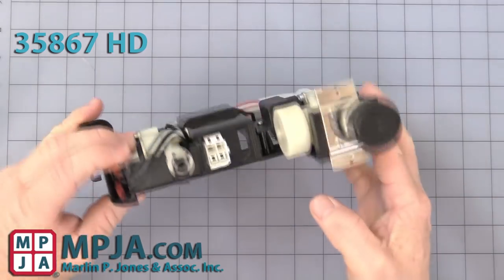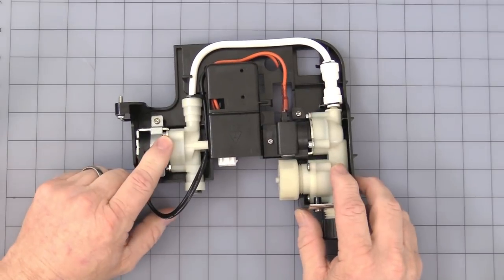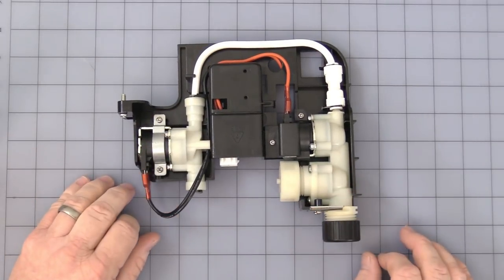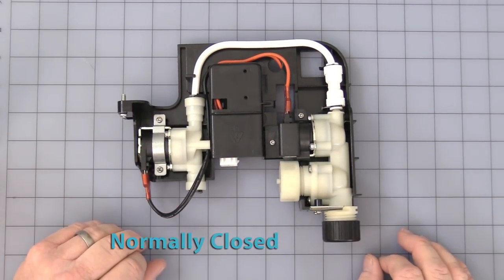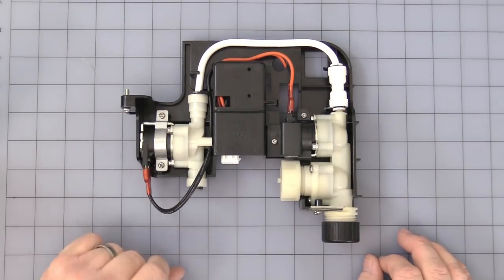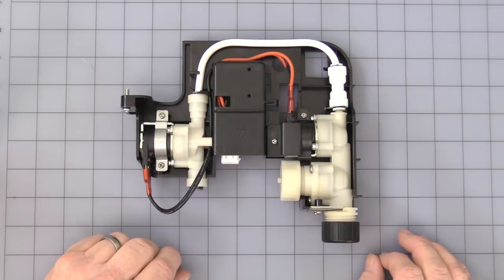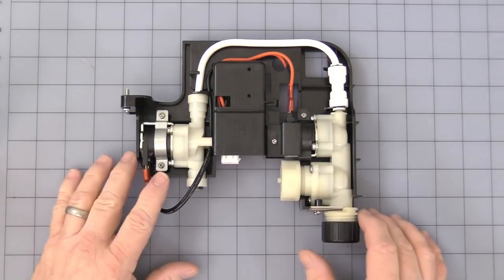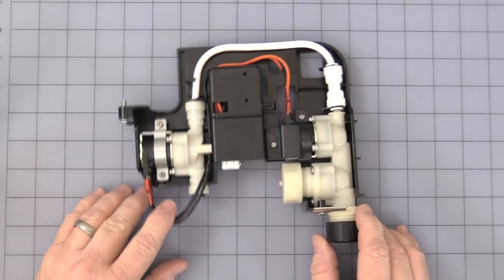It comes with a dual valve. Each valve is rated at 120 volts AC, 100% duty cycle, quarter inch fast-ons for input, rated at one megapascal or 10 bar, which is equivalent to about 145 psi.